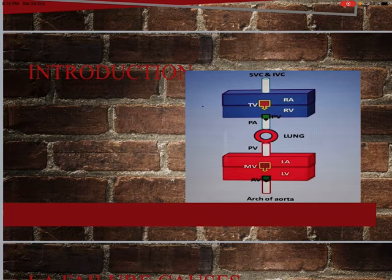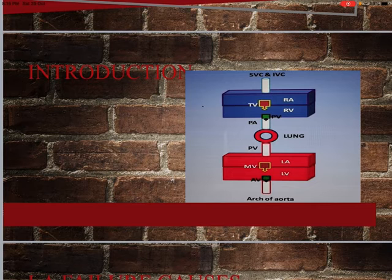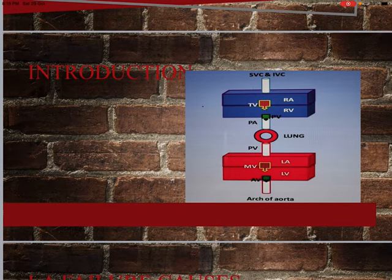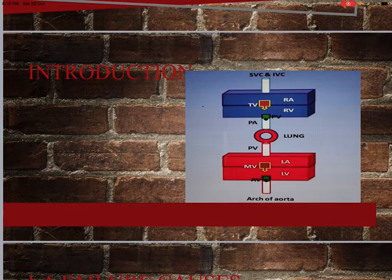Critical MS is less than 0.7 cm². In India, the most common cause of mitral stenosis is rheumatic heart disease. Other rare causes include congenital MS, Hurler syndrome — which is a lysosomal storage disorder where alpha-L-iduronidase is deficient — and valvular calcification. Left atrial myxoma can also cause mitral stenosis.